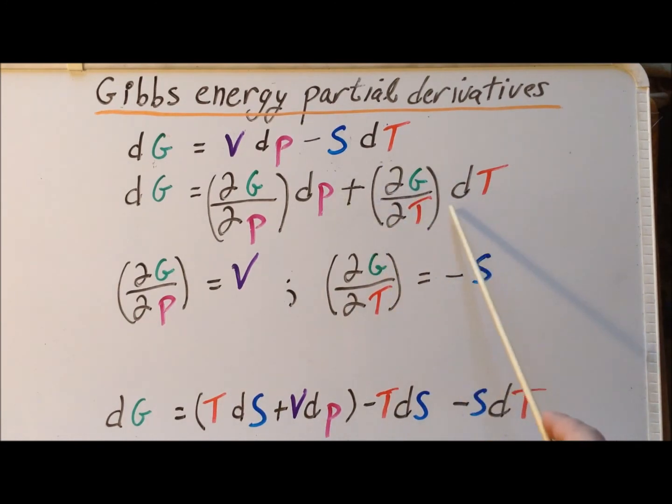Similarly, the coefficient multiplying dT here is the partial of G with respect to T, and the coefficient up here is minus the entropy, minus S. So these two expressions must be true. So we get our second result, that the partial of G with respect to T is equal to minus the entropy.